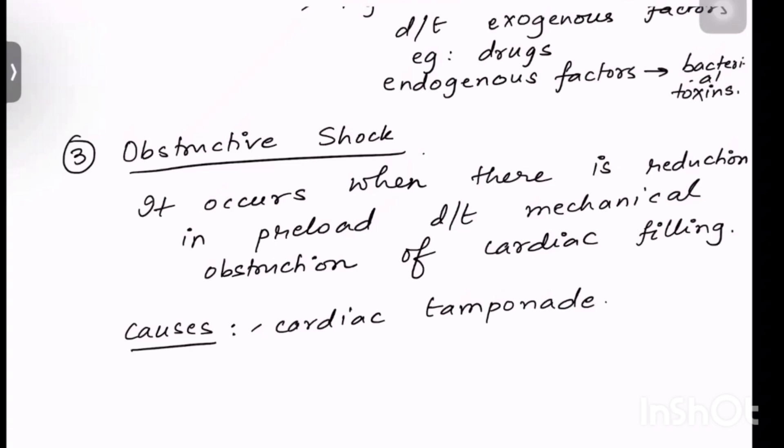Obstructive means that there is a problem in cardiac filling because there is a reduction in the preload. Now what are the causes of obstructive shock? Cardiac tamponade. Suppose there is a condition when the heart is unable to expand, when the heart is unable to dilate because there is fluid outside. Therefore cardiac tamponade is one of the causes.